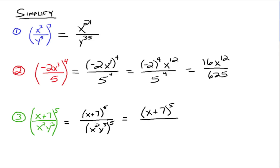The denominator, however, is a product raised to an exponent, so we can apply the product raised to exponents property from the previous video. We get x to the 10th, because 2 times 5 is 10, and y to the 15th, because 3 times 5 is 15. Be very careful — you may be tempted to write the numerator as x to the 5th plus 7 to the 5th, but that's not correct. The numerator is just x plus 7, all of that raised to the 5th power. That's it for now — study well, and please let me know if you have any questions.